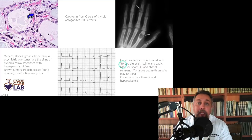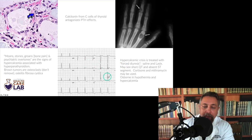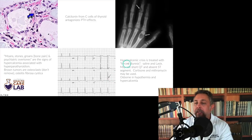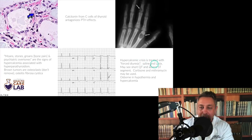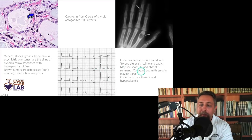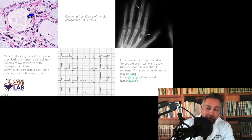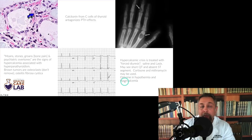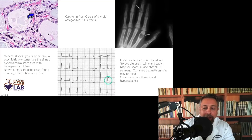With hypercalcemia of hyperparathyroidism you may see EKG changes: peaked T waves, a very short QT or almost no QT, and an absent ST segment — P-Q-R-S-T with no ST segment. Hypercalcemic crisis is treated with forced diuresis: saline-load the patient first, then give Lasix. Cortisone and mithramycin may also be used. The Osborne wave, an extra wave seen in hypothermia, can also appear in hypercalcemia. So: short QT, absent ST segment — all seen in hypercalcemia.